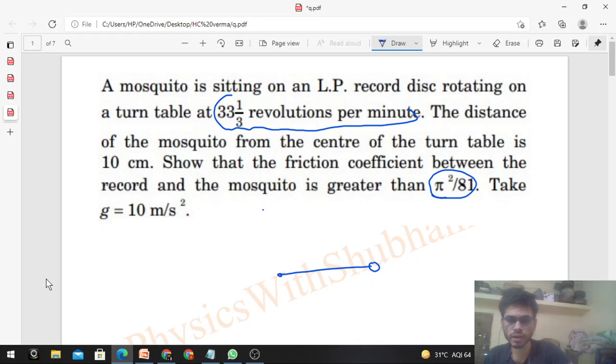First, let's find omega. What is the value of omega? Actually, 33⅓ is 100/3 revolutions per minute. One revolution means 2π radians, and per minute means we divide by 60 seconds.